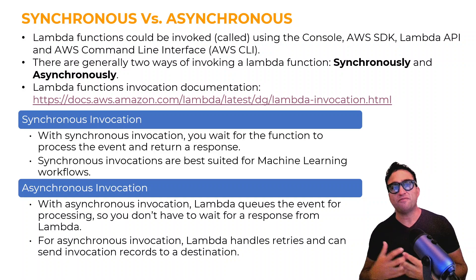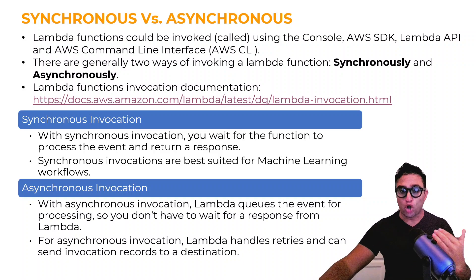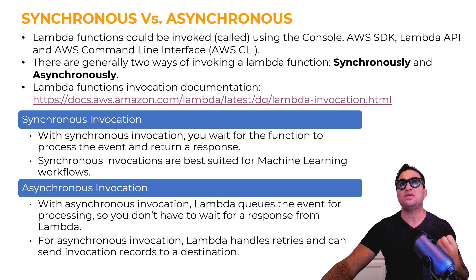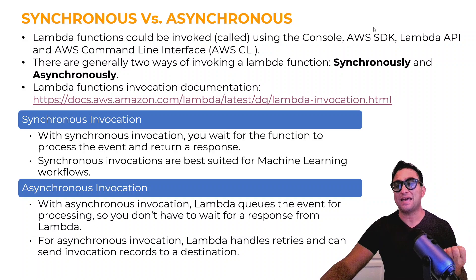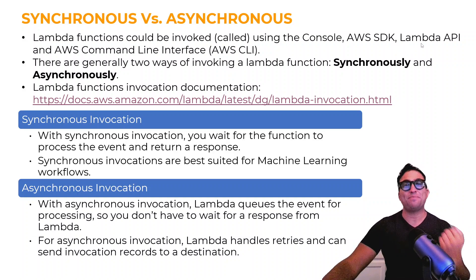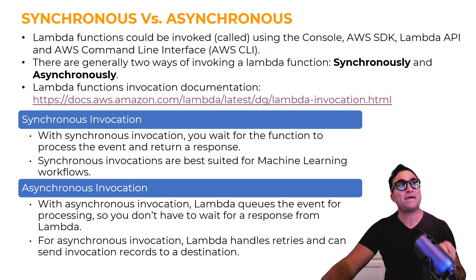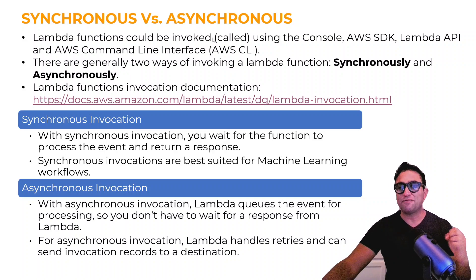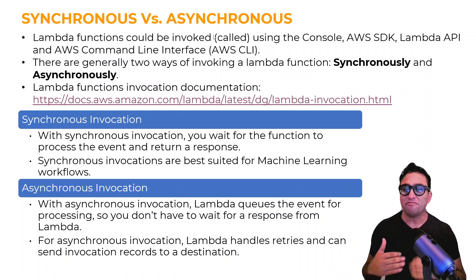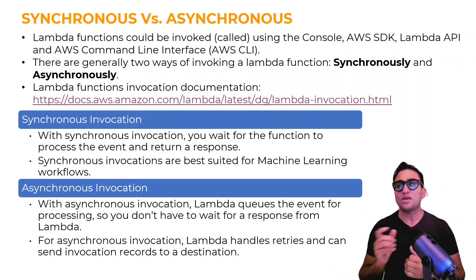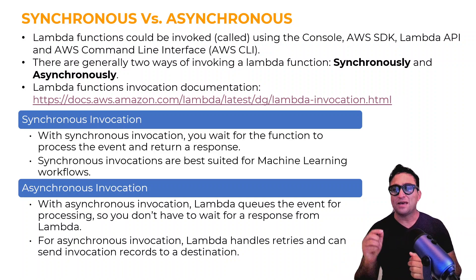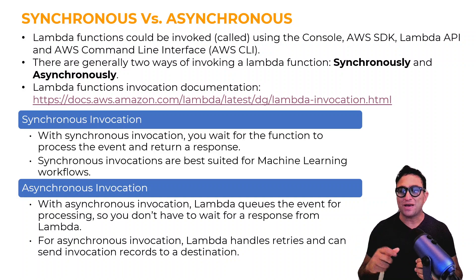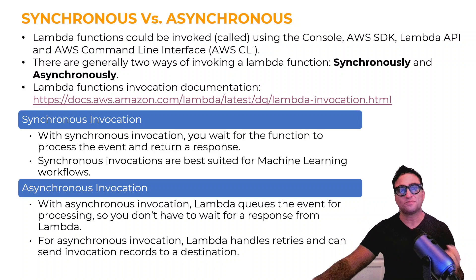Lambda functions can be invoked or called using many strategies. I can use the AWS Management Console, the AWS SDK, the Lambda API, or the AWS CLI — the command line interface. I've already shown you how to invoke a Lambda function using the console, and today we'll learn how to use the AWS SDK to do that for us.